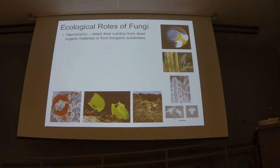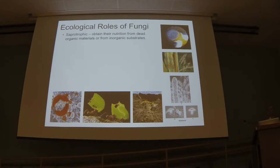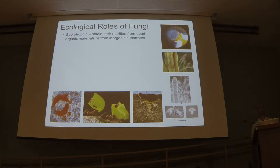First of all, fungi are saprotrophic — they obtain their nutrition from dead organic materials or inorganic substrates. A leaf falls in a forest: fungi are going to eat it. If the fungi didn't eat it, those nutrients — that carbon, that nitrogen, that phosphorus — would have a really hard time getting cycled back into the ecosystem. Fungi do it very efficiently. They can break down wood, which animals can't digest. They turn wood back into its organic compounds and back into soil so that new plants can grow.